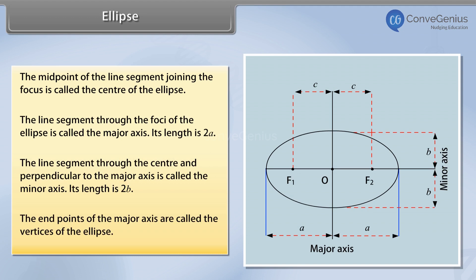The endpoints of the major axis are called the vertices of the ellipse.